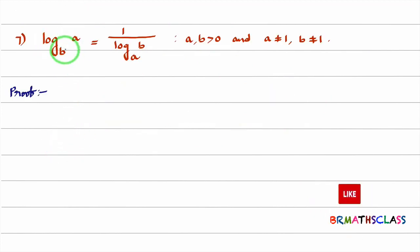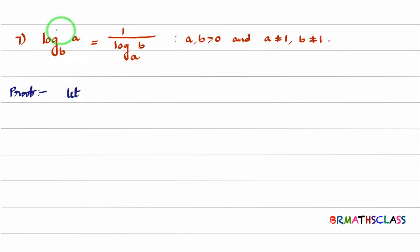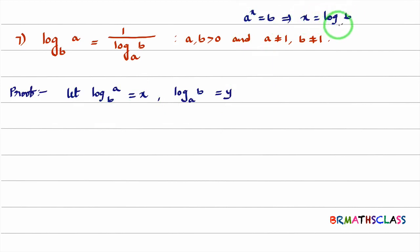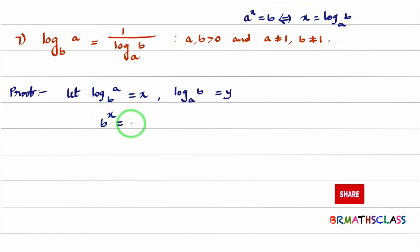Now we will see the proof of the seventh property: log(a) base b = 1 / log(b) base a. This is also a very useful result. To prove this, I'll consider log(a) base b as x and log(b) base a as y. From the definition of logarithm, whenever you see a^x = b you can write x = log(b) base a, and vice versa. So writing in exponent form: b^x = a is equation 1, and a^y = b is equation 2.